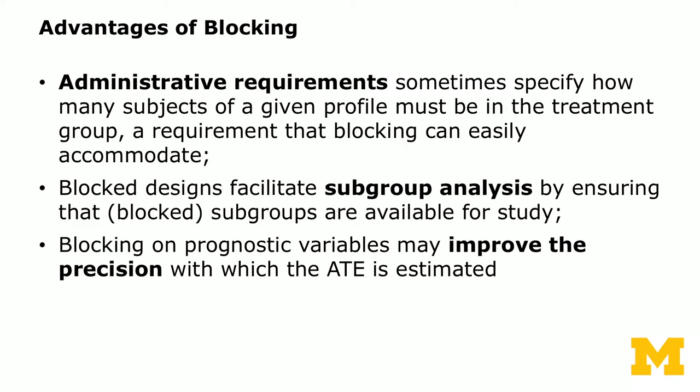There are several advantages of blocking. Sometimes there are administrative requirements specifying that the treatment condition must have a certain proportion of each type of subject — whether gender or ethnic groups. Blocking on gender ensures 50% men and 50% women in the treatment group. Similarly, blocking on ethnicity guarantees the required proportion of each race. Without blocking, when doing complete random assignment with a minority group, you can easily end up with no minority members assigned to treatment.